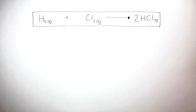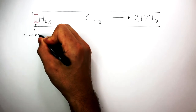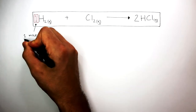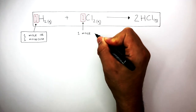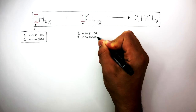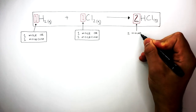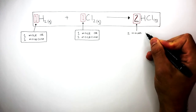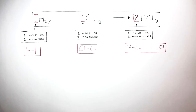Here is the equation showing how hydrogen reacts with chlorine to form hydrogen chloride. The imaginary 1 in front of H₂ represents one mole of hydrogen molecules, and there is also one mole of chlorine molecules. The 2 represents two moles of hydrogen chloride molecules being produced. These diagrams represent hydrogen, chlorine, and hydrogen chloride.